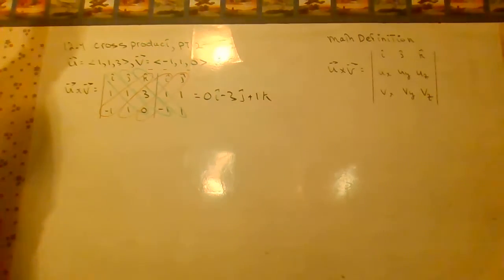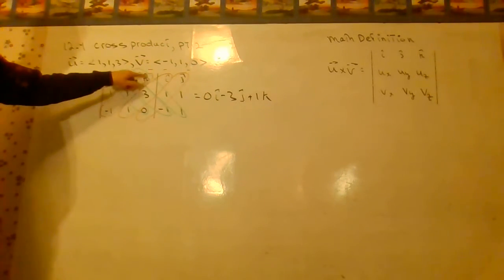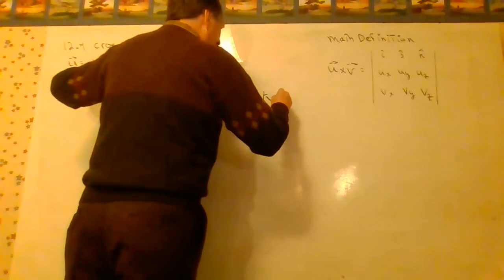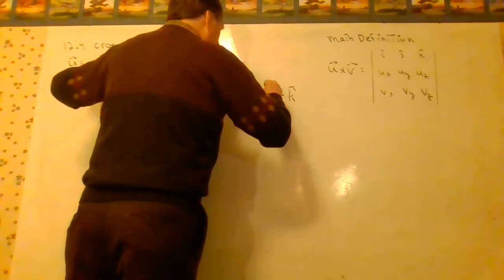Now we go the other direction. Negative 1 times 1 times K is negative K. We introduce another negative, so that's really I'll write minus minus K.